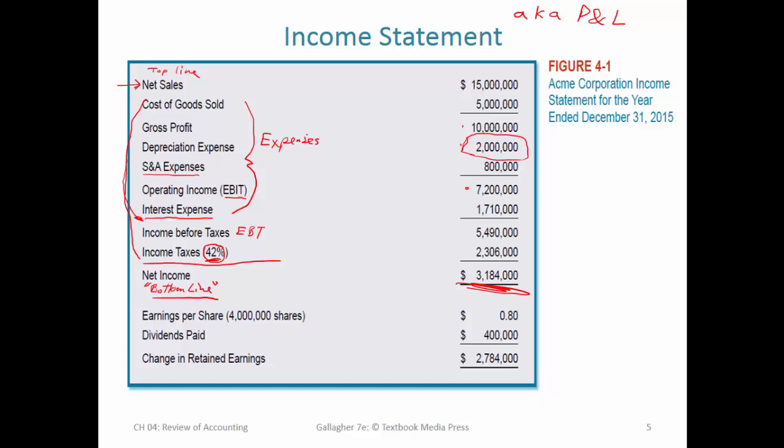This company is going to declare a dividend, paying $400,000 of the $3.1 million out. Therefore, the amount left over that stays in the company and gets reinvested is $2.7 million, which is known as retained earnings — it's an increase to retained earnings.